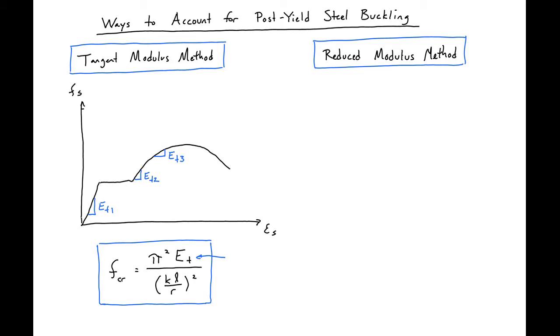So this is how the tangent modulus method works. We would find the stiffness at a respective strain and then use that stiffness to find our critical stress.